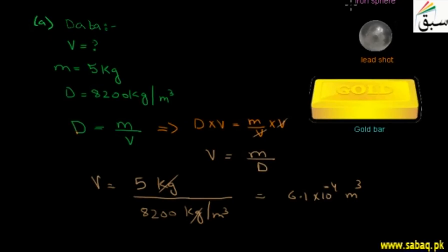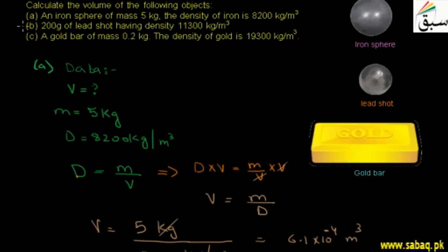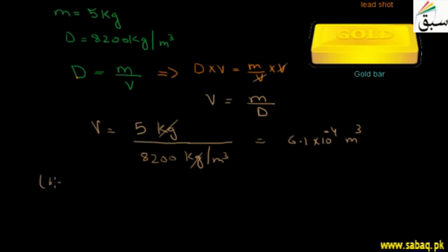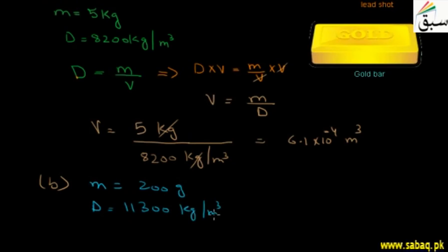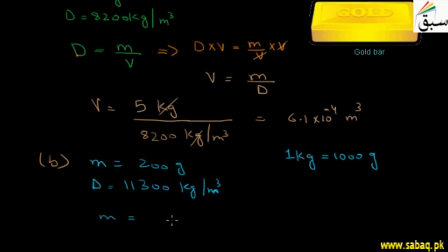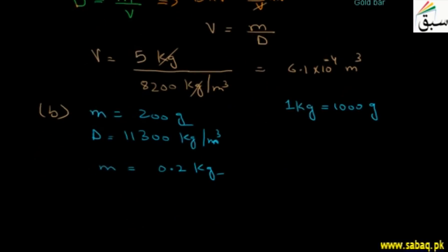Now for the second statement, we have to find out the volume of a lead shot. Its mass is 200 grams and density is 11300 kg per m³. In Part B, mass is given as 200 grams and density is given as 11300 kg per m³. Since mass is in grams, we need to convert to kg: 200 divided by 1000 equals 0.2 kg.